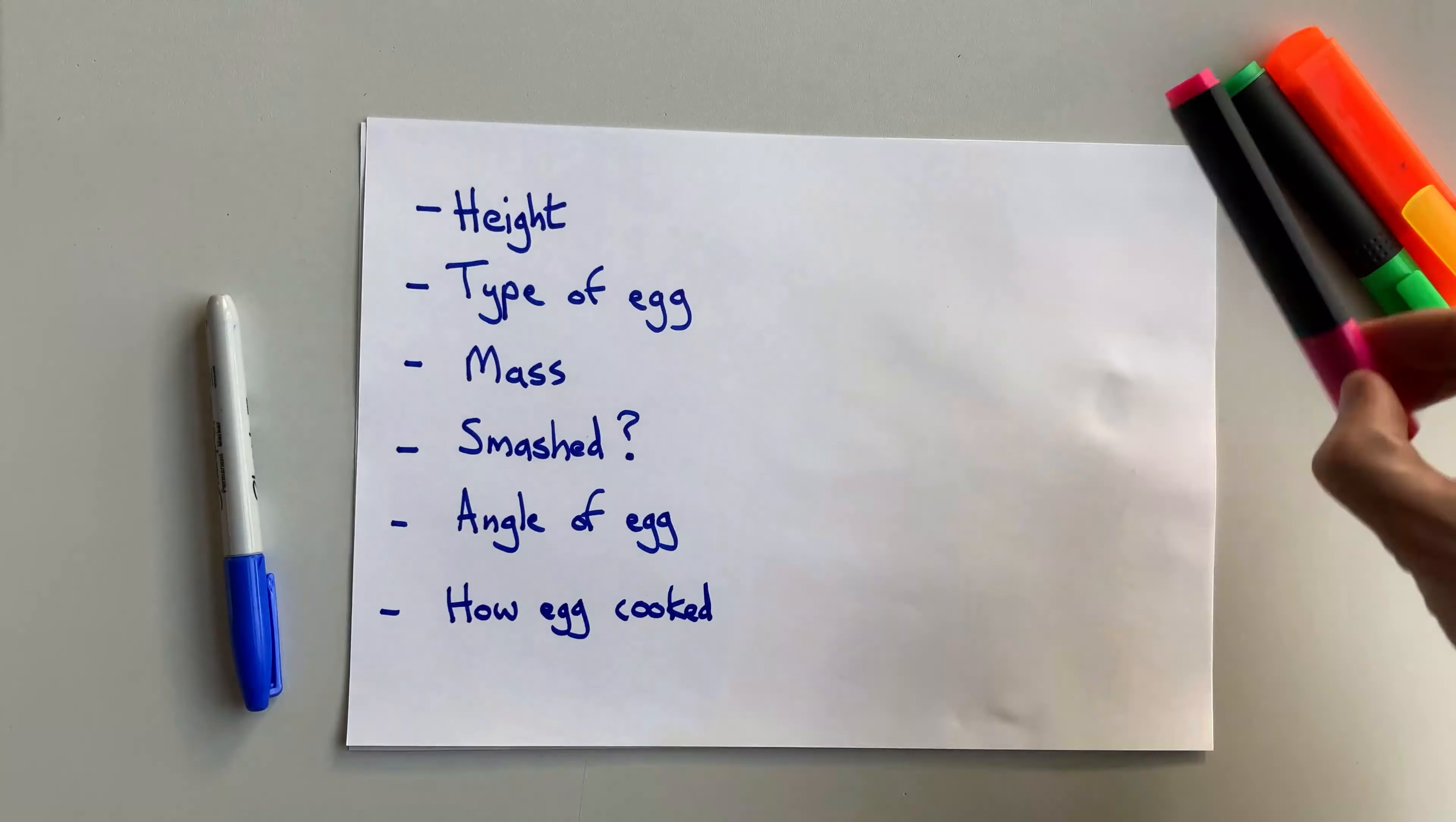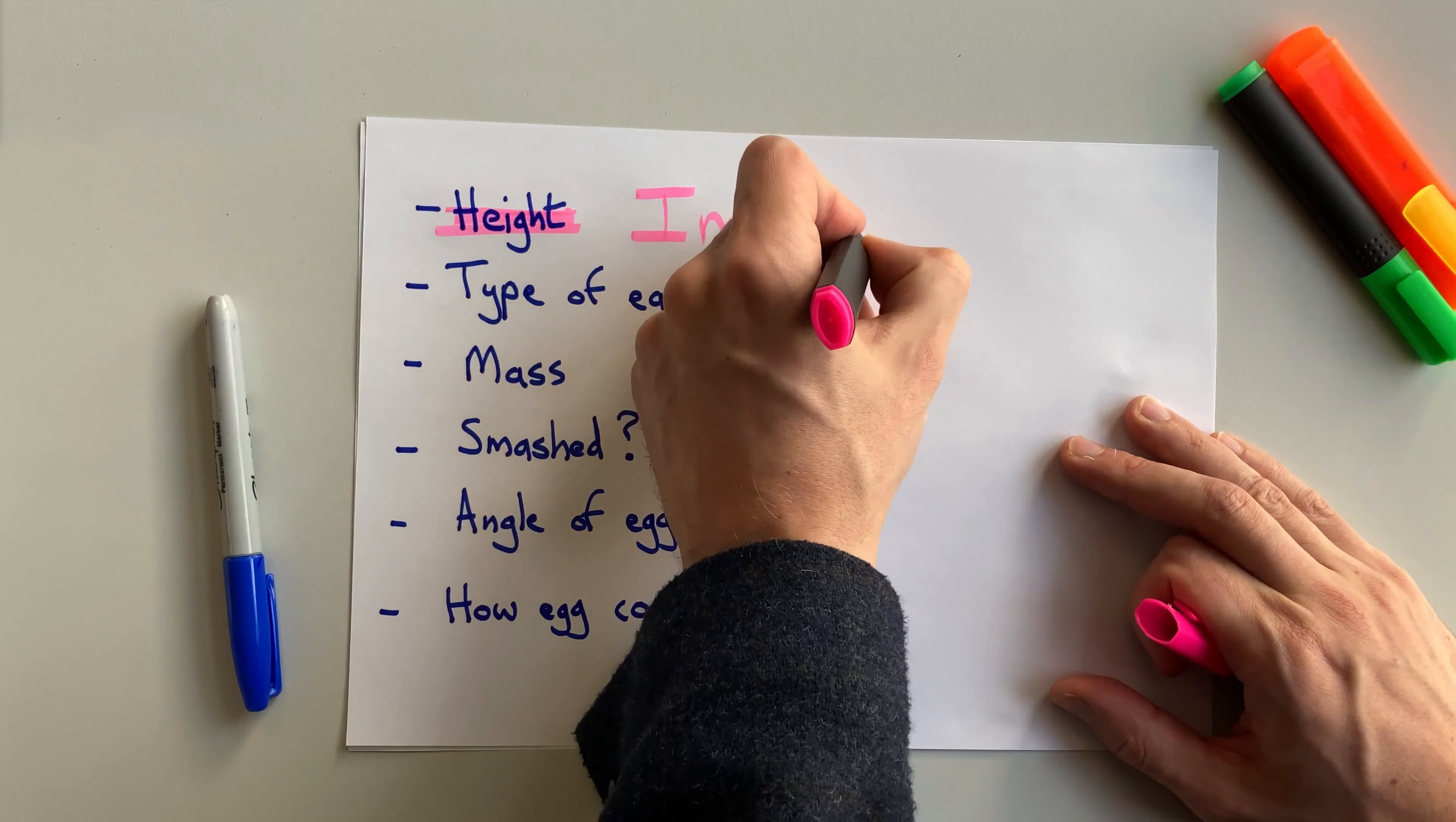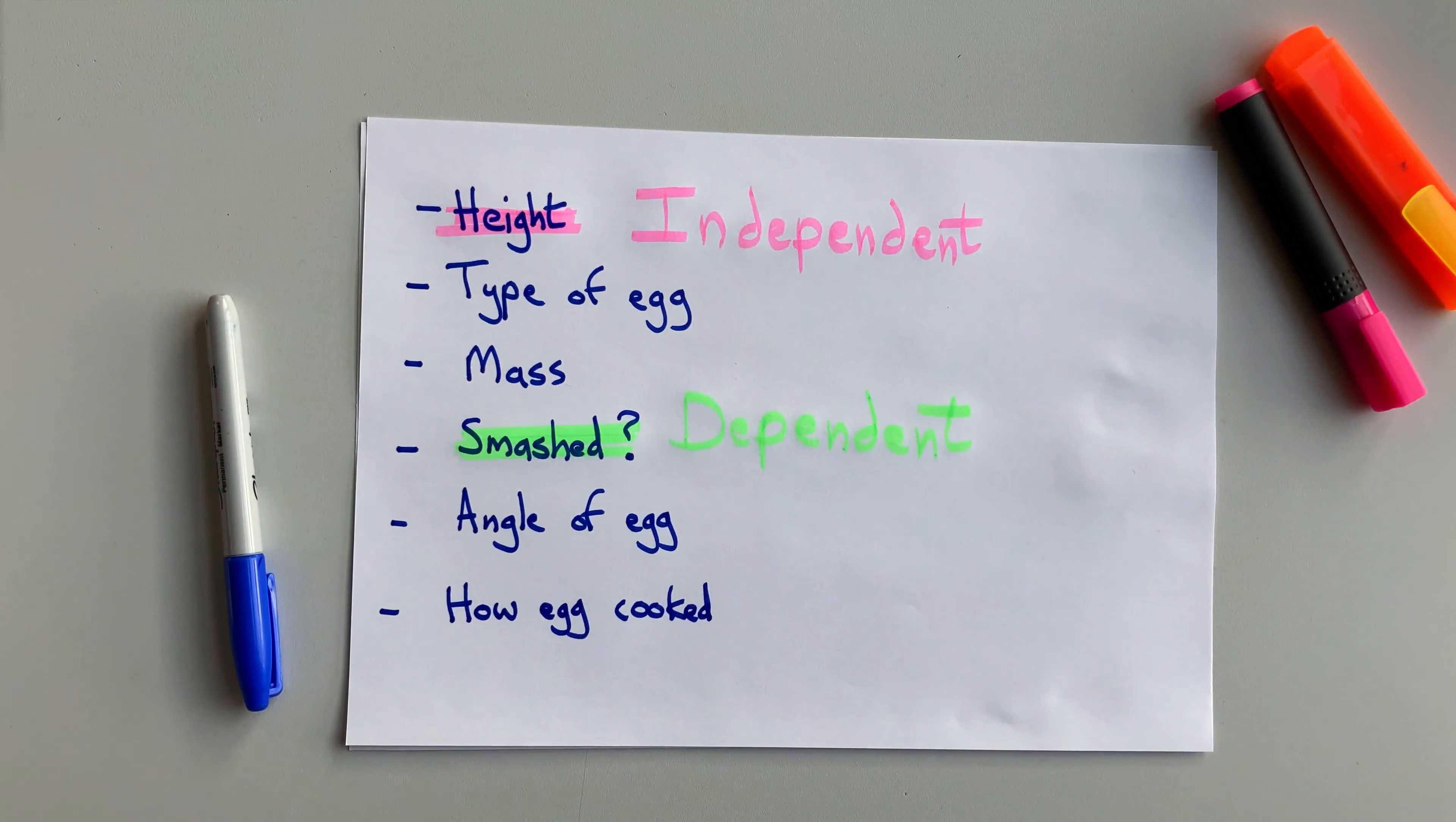Okay, here they are. Independent would be the height, because that's what I'm putting in beforehand. I'd be looking to see if my egg smashed, so that's my dependent variable. And everything else is a control variable.